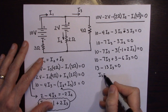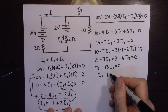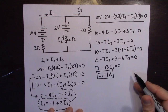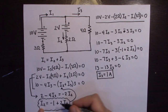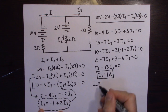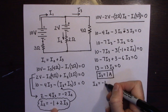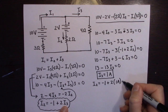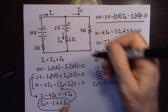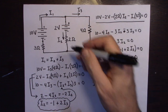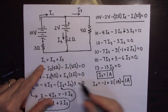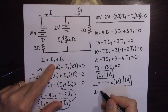Therefore I3 equals 1 amp. Using I2 = negative 1 plus 2 times 1A, that gives I2 = 1 amp — positive, so the direction I guessed was correct. And from the junction equation I1 = I2 + I3 = 2 amps. If the current had come out negative, I'd just know it was going the other way. With a calculator, this process is much easier.